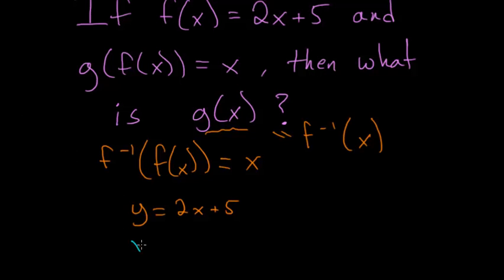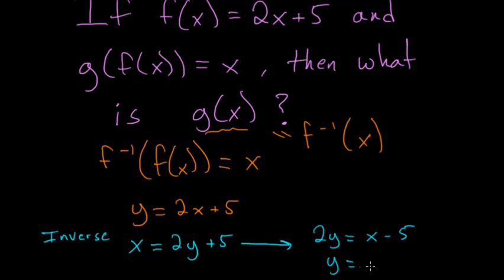So switching x and y, we have x is equal to 2y plus 5. So this is for the inverse. And subtracting 5 from each side, we have 2y is equal to x minus 5. And then dividing each side by 2, we have y is x over 2 minus 5 halves. And this is just equal to the inverse of f.